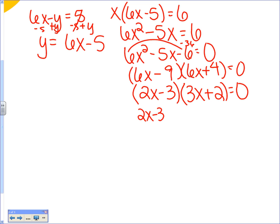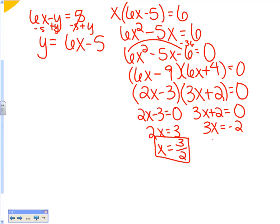So 2x minus 3 equals what? 0. Or 3x plus 2 equals 0. Y'all remember that part to solve it? So 2x equals 3. So what does x have to equal? 3x equals negative 2. So what does x equal? Negative 2 over 3. Are we done?